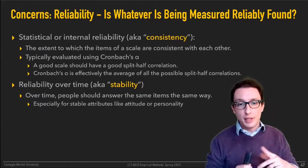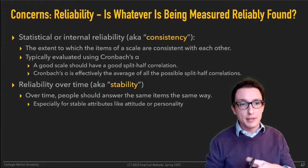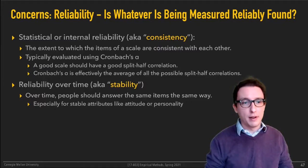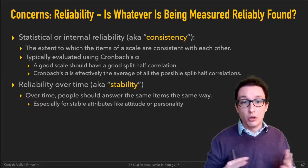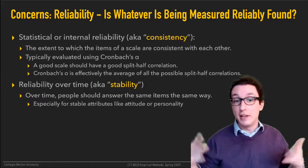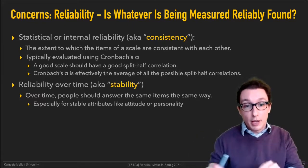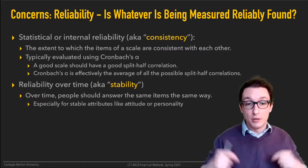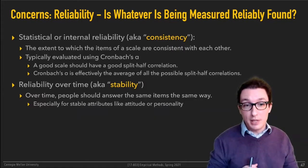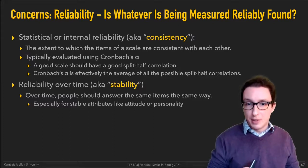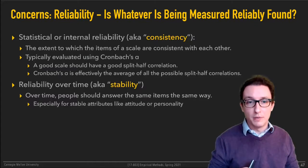The other kind of reliability is stability over time: if the survey tries to capture attributes known to be stable — like personality or attitude toward climate change — and you survey people six months apart, you'd better get similar answers the second time compared to the first.